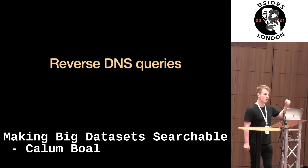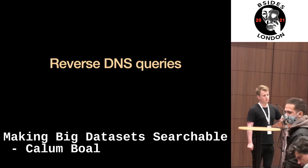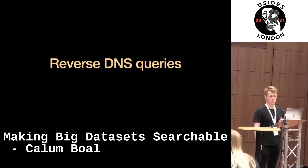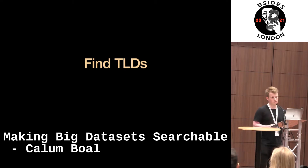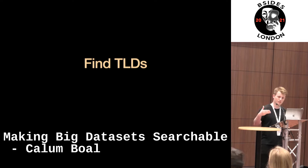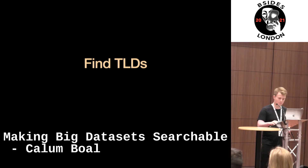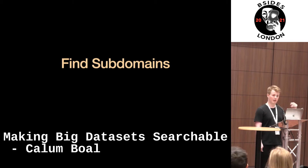It supports both single address reverse DNS queries, or you can give it a CIDR range — you can pull reverse DNS records for an entire /8 ASN or entire /16, and it'll just give it to you no problem. You can also find TLDs: if you've got a domain and want to see what other TLDs are registered to it, you'd usually have to brute force that, but with this you just get the data back instantly. You can find subdomains too — it's not the most comprehensive way, but you get it back instantly.